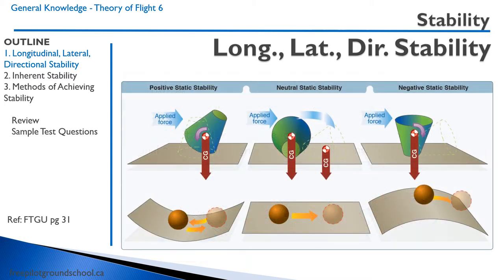Let's look at this cartoon. We can talk about positive static stability. If we have a cup that's upside down, the center of gravity is quite low on the cup. If the cup gets upset a little bit, it will tend to return to its original position, just like a ball inside of a bowl will return to its original position.